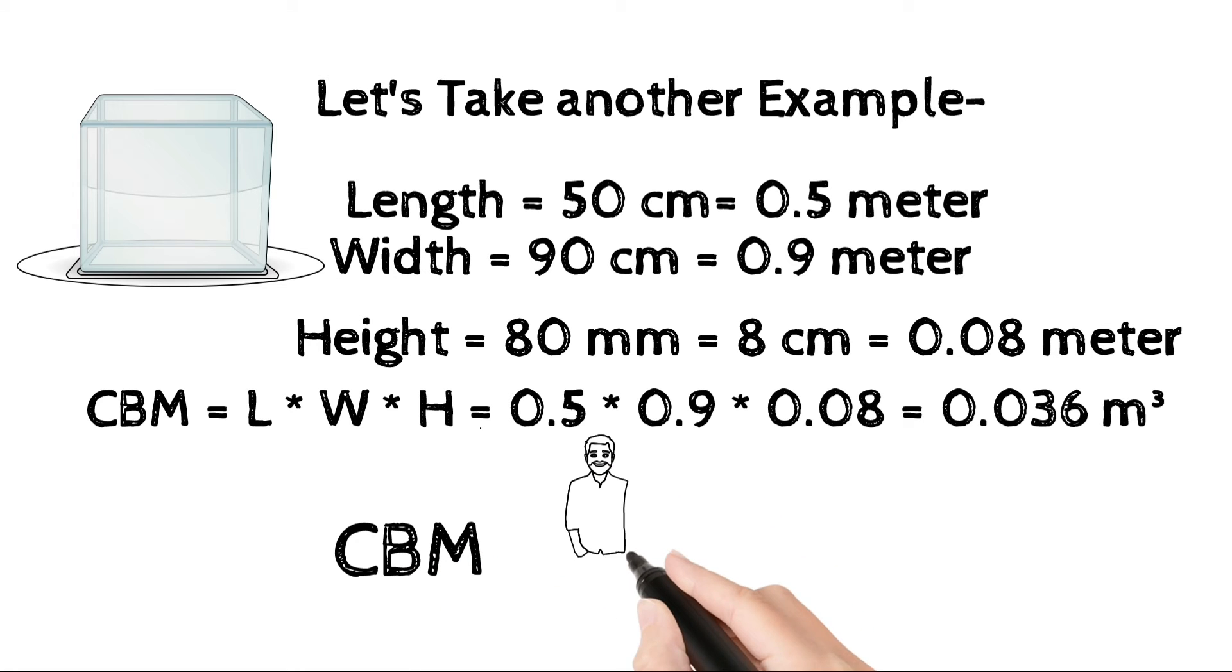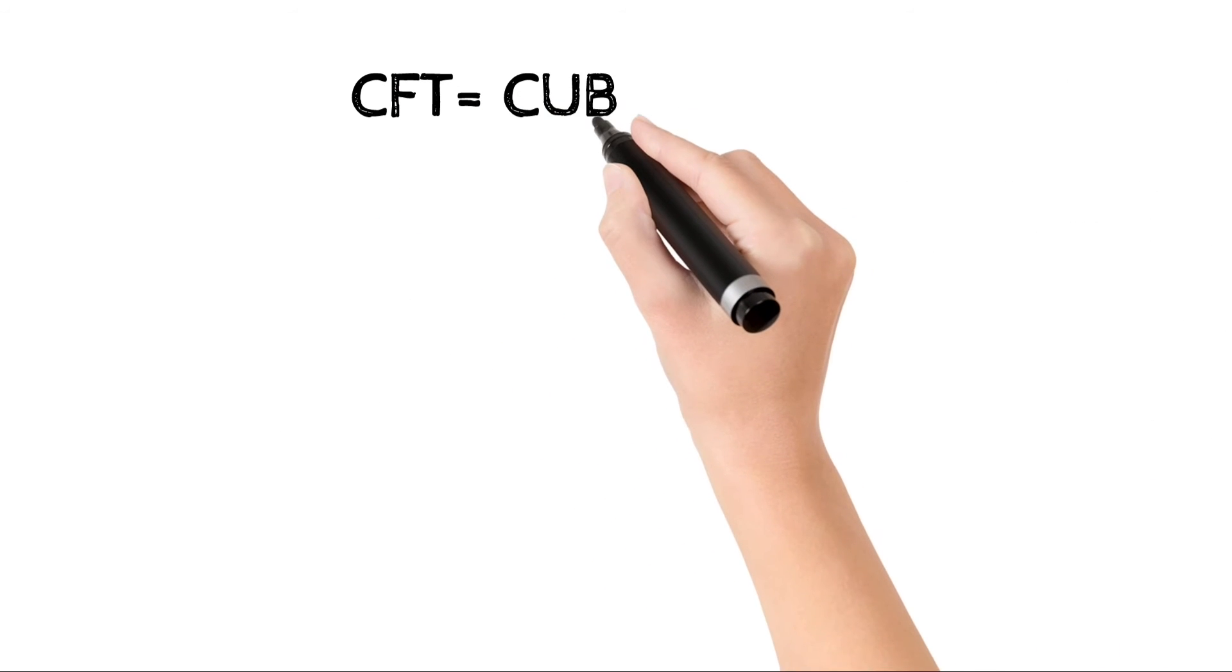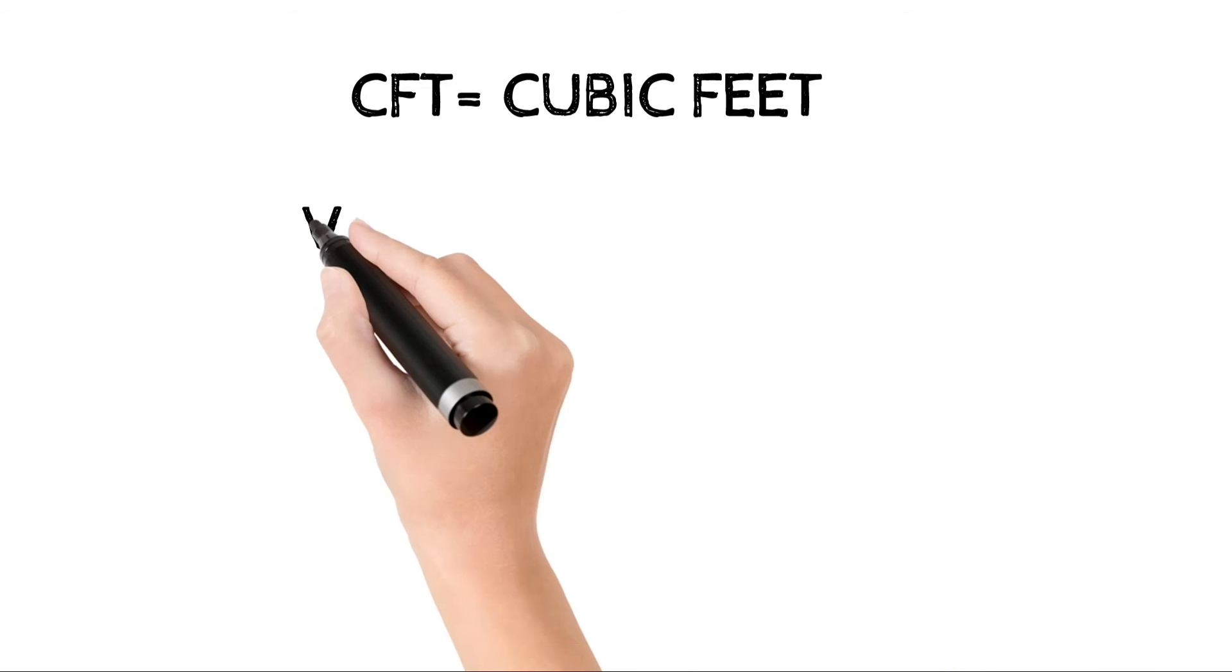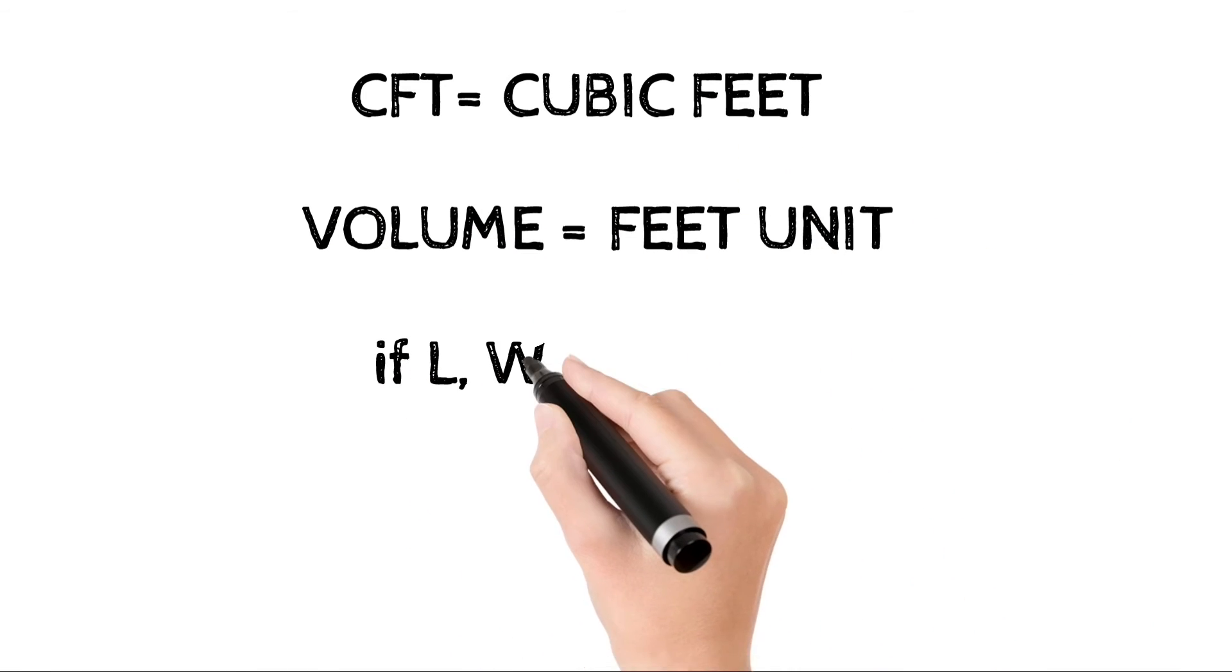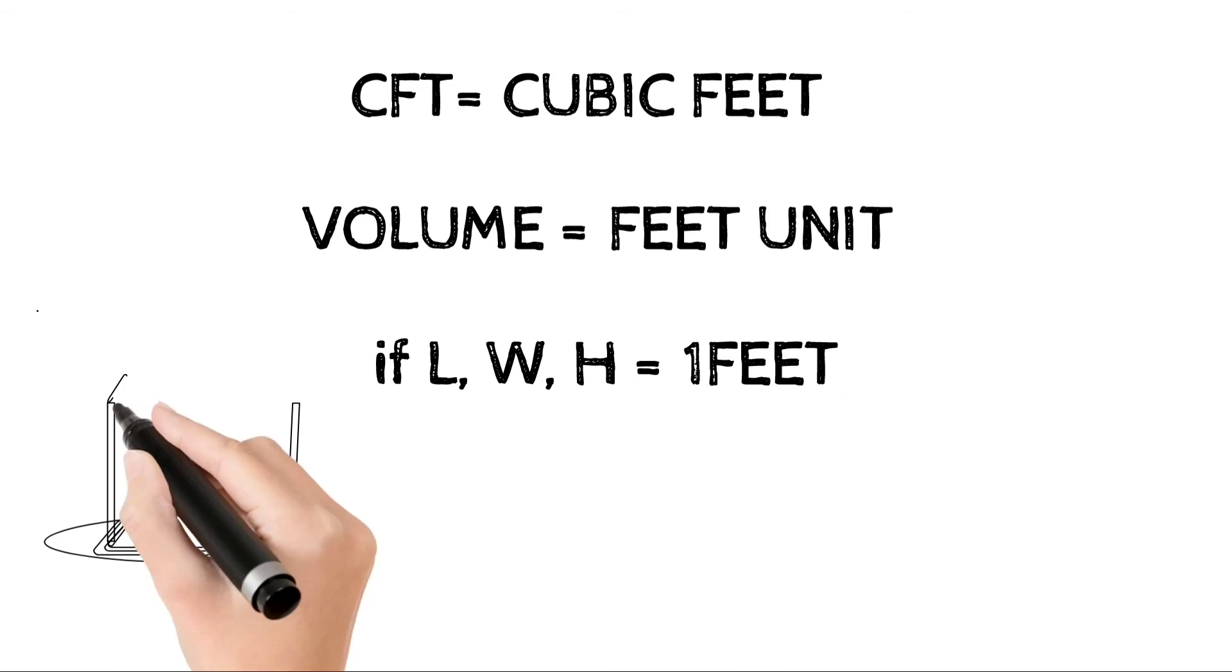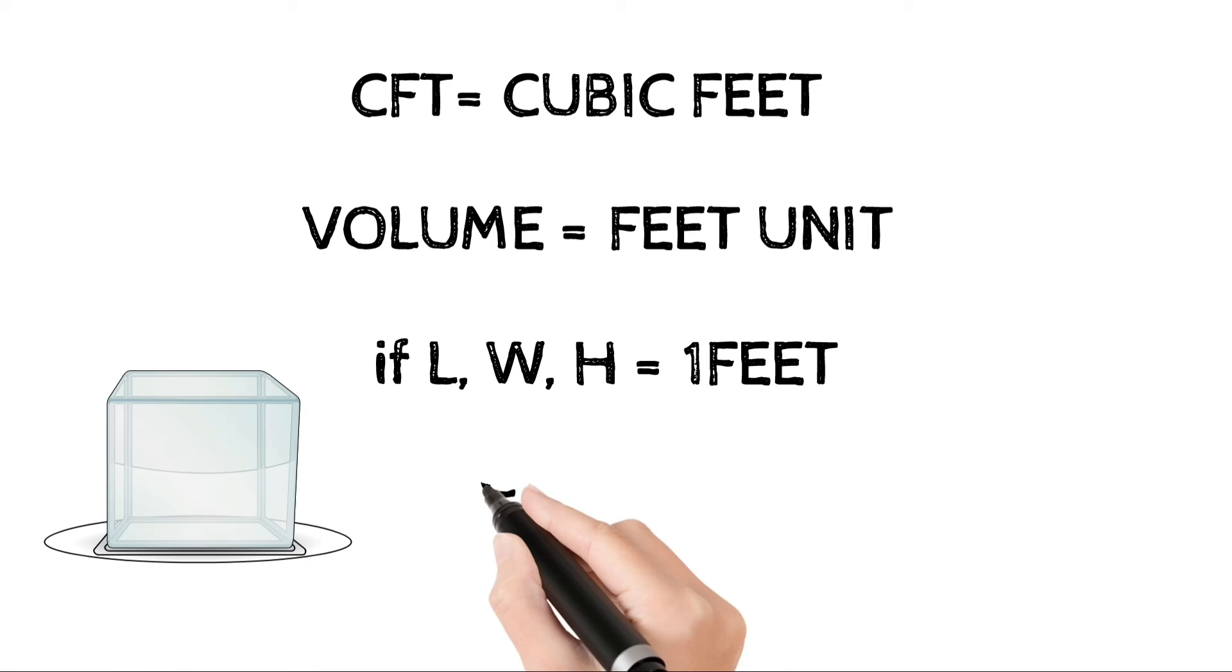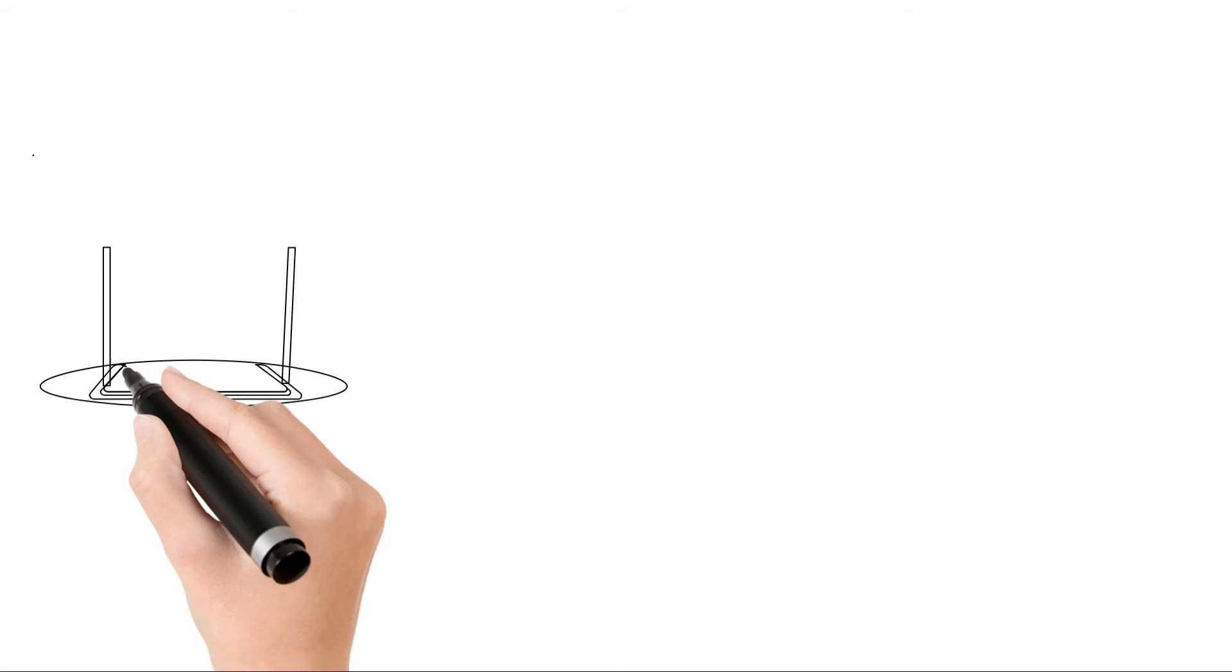Now move on to CFT or cubic feet. This is volume unit of cube in feet unit. If length, width, height of cube is 1, 1, 1 feet, then CFT or volume of the cube is 1 cubic feet. Let's understand this concept with another example.